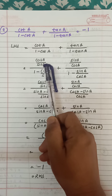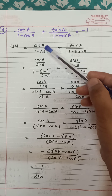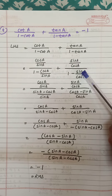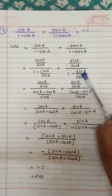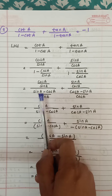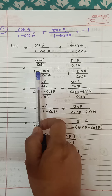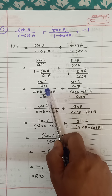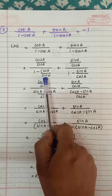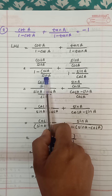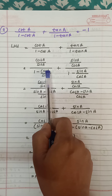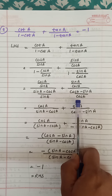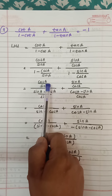So cot means cos a upon sin a — substitute here also cos a upon sin a. Now the denominator is a subtraction of fractions, so the numerator stays as it is. Both sides get multiplied: denominator becomes sin a minus cos a upon sin a, and here cos a minus sin a upon cos a.